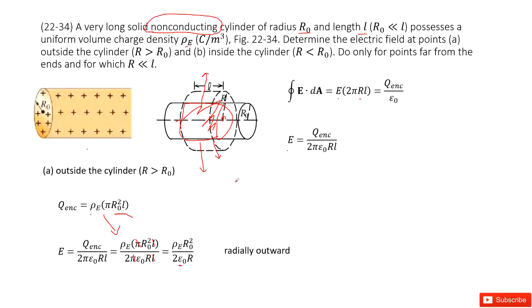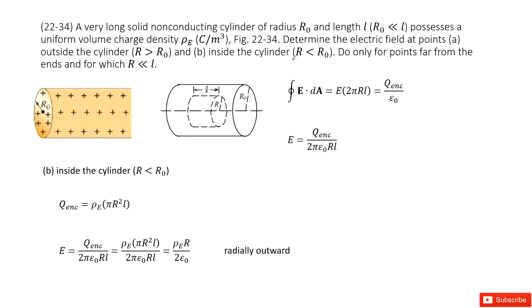The second region is inside this cylindrical object. So inside this cylindrical object. Similarly, we still need to find enclosed charge. So enclosed charge is just the region enclosed by this Gaussian surface.